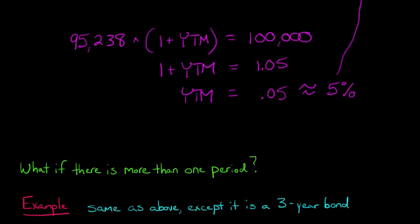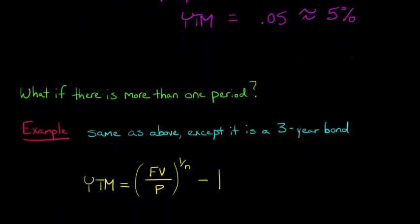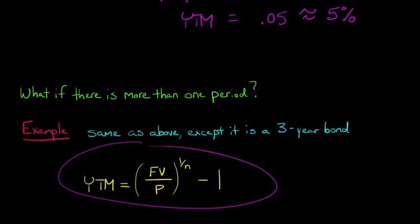So we've got a really nice formula, and I'll just show it to you. Let's just say that we had a 3-year bond. Let's say that we have the same things as above, where it's a $100,000 face value. We're going to pay $95,238, but this time we're not going to get that $100,000 face value until 3 years later. It's a 3-year bond instead of a 1-year bond. So now I just want to show you this formula will give us the result and give us our yield every time, no matter how many periods there are.